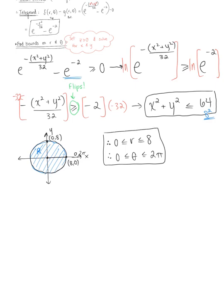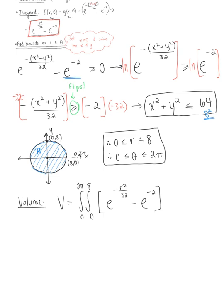We have our bounds and we're ready to go. The volume is defined by the double integral — theta as the outer integral from 0 to 2 pi, and the inner integral for the radius from 0 to 8. Our integrand is the natural exponential raised to negative r squared divided by 32, minus the natural exponential raised to negative 2. Don't forget the area differential in polar coordinates is r dr d-theta.